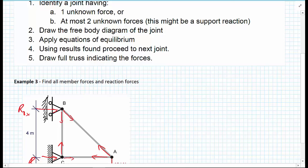Once we've chosen the joint where we're going to start our analysis, we have to draw the free body diagram of that joint. With the free body diagram set up, we can go on to write down and apply the equations of equilibrium.